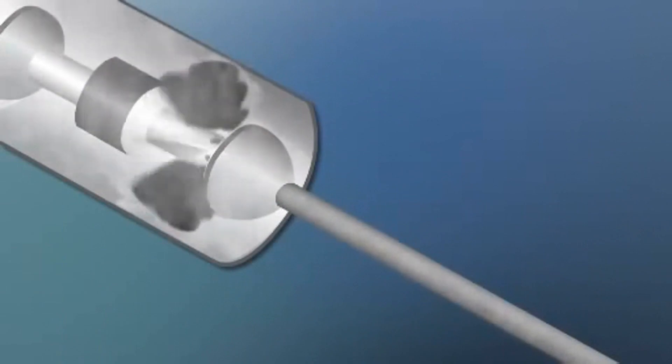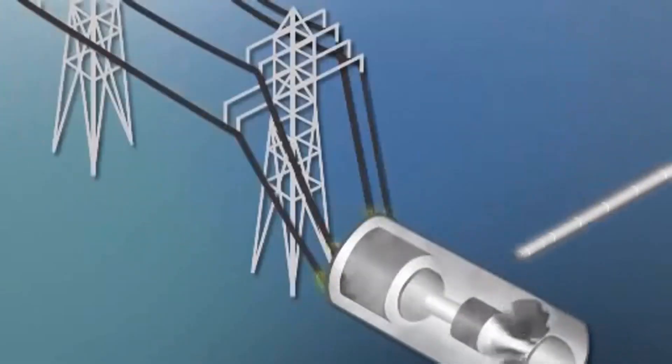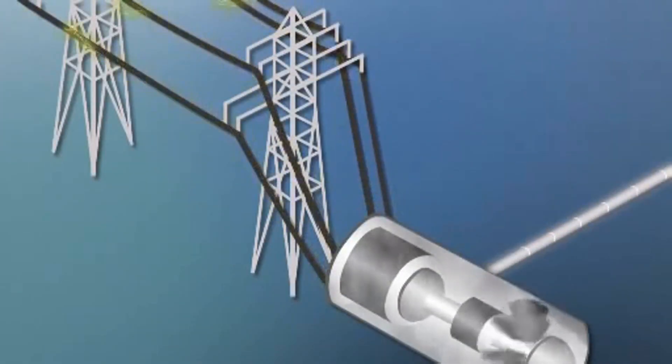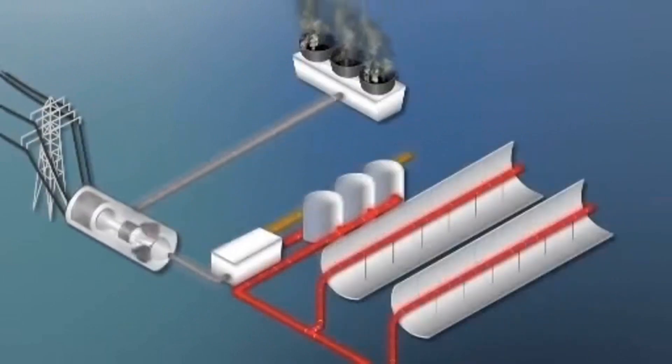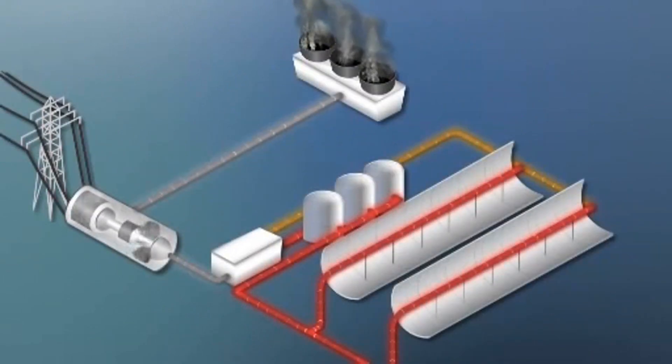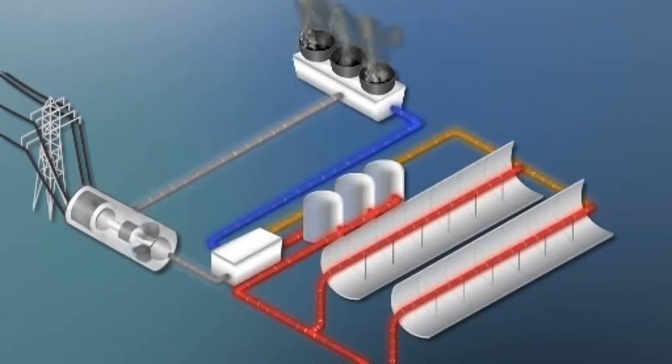The turbine spins the generator which produces electricity. Here is the good part: once the fluid transfers its heat, it is recycled and used over and over in a closed cycle. The steam is also cooled, condensed and recycled again. Additionally, the heated liquid can be stored and used later when the sun isn't shining.